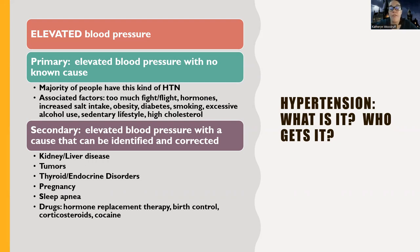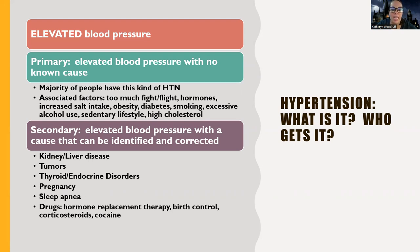There can be contributing factors to primary hypertension, like too much fight-or-flight — their sympathetic nervous system is over-activated, which is very common today because we live in a stressful world where people work too much and don't rest or sleep enough. Hormones are associated with primary hypertension, having too much salt intake, obesity, high cholesterol, diabetes, smoking, and excessive alcohol use.